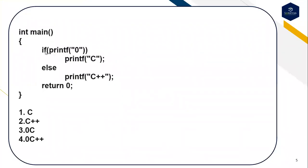This is the next question: int main, if(printf("0")) print 'C', else print 'C++'. The options are: first option C, second option C++, third option zero followed by C, fourth option zero followed by C++. You can guess the output of this code.